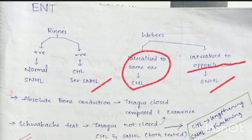In Absolute Bone Conduction test, the tragus is closed and it is compared with the examiner. Here we only test bone conduction — no air conduction is tested. In Schwabach's test, the tragus is not closed, and here we can test both conductive hearing loss and sensorineural hearing loss, compared with the examiner.